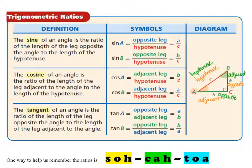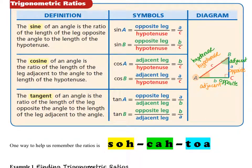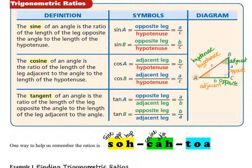This can be hard to remember when first learning it, so we use the mnemonic SOHCAHTOA. SOHCAHTOA stands for: Sine is Opposite over Hypotenuse, Cosine is Adjacent over Hypotenuse, and TOA is Tangent, which is Opposite over Adjacent.